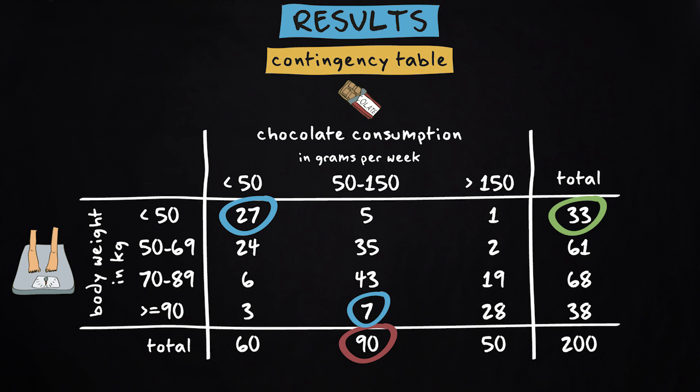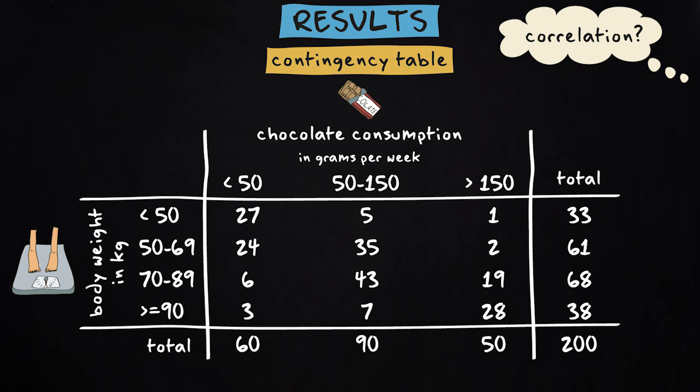In this form, the table does not tell you much yet about the correlation between the two variables, because the columns and rows contain different numbers of cases. It provides more insight when you compute percentages.